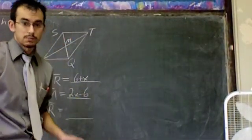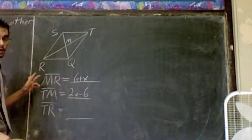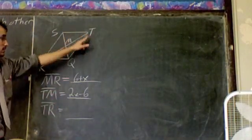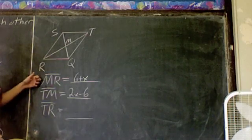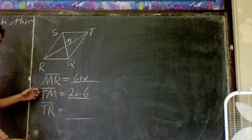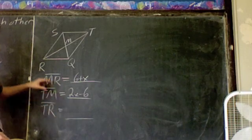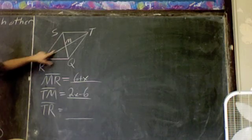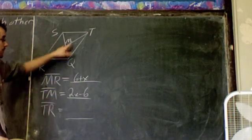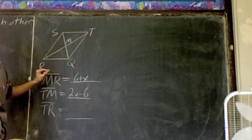Alright. So this particular problem that we see here, we've got this parallelogram STQR. M in the middle. We're given that MR is 6 plus X. We're given that TM is 2X minus 6. So let's see. MR is half of this diagonal. We've got TM is the other half of that diagonal.